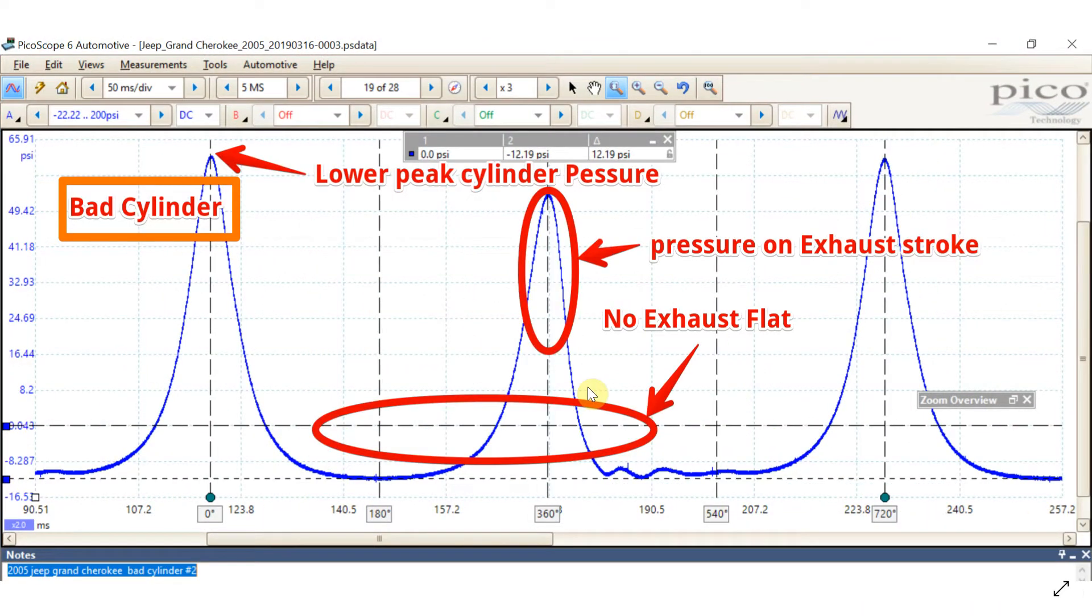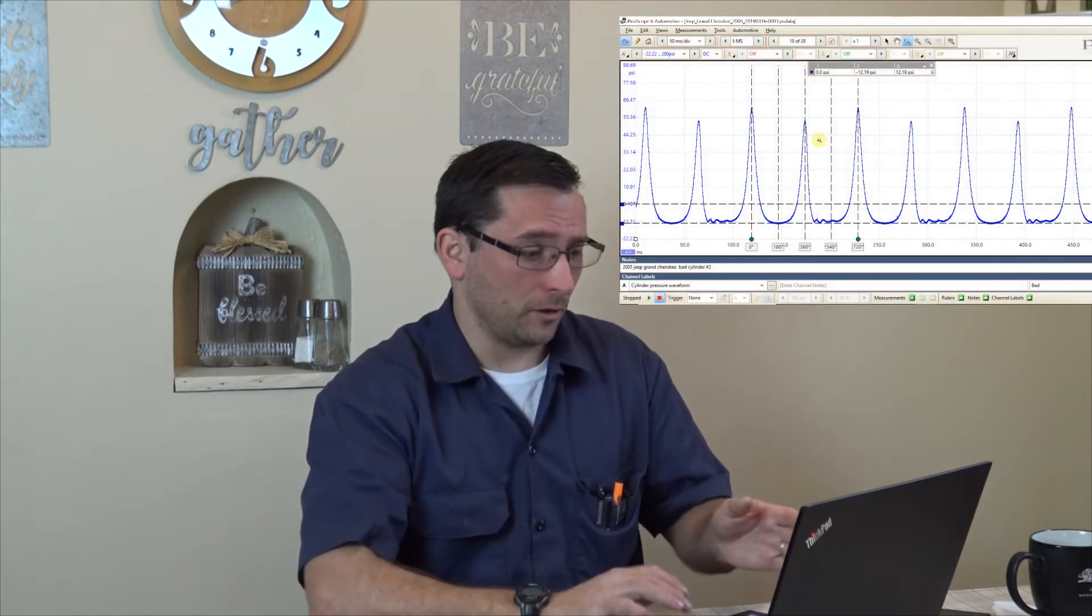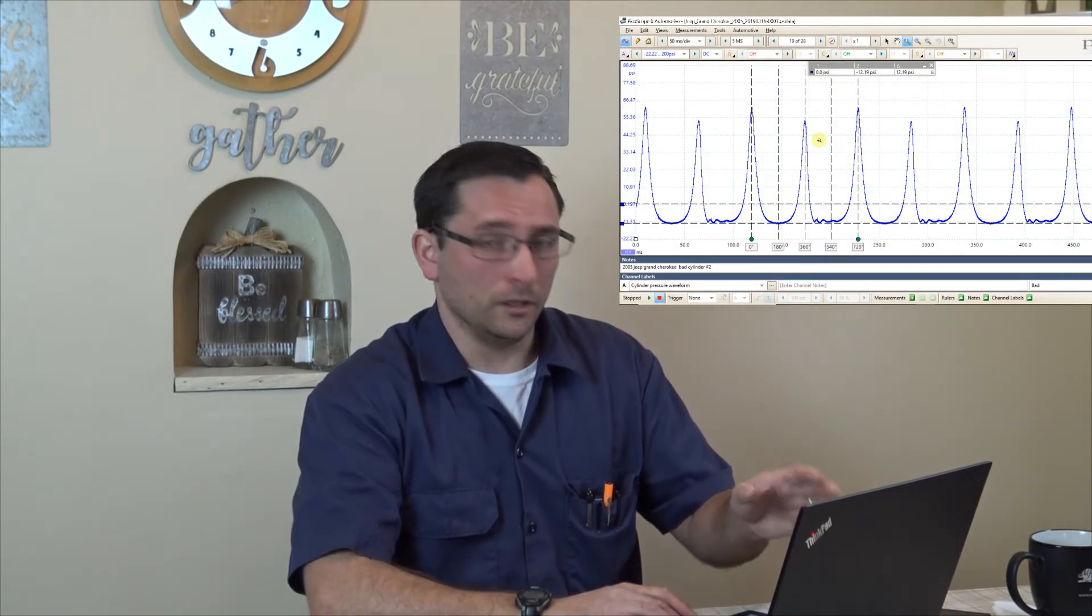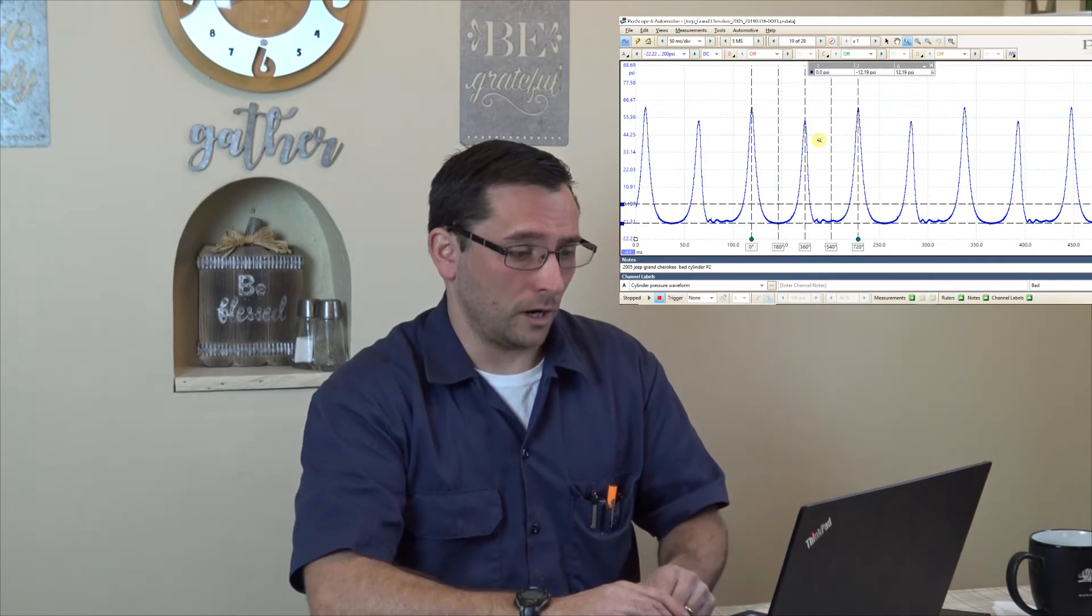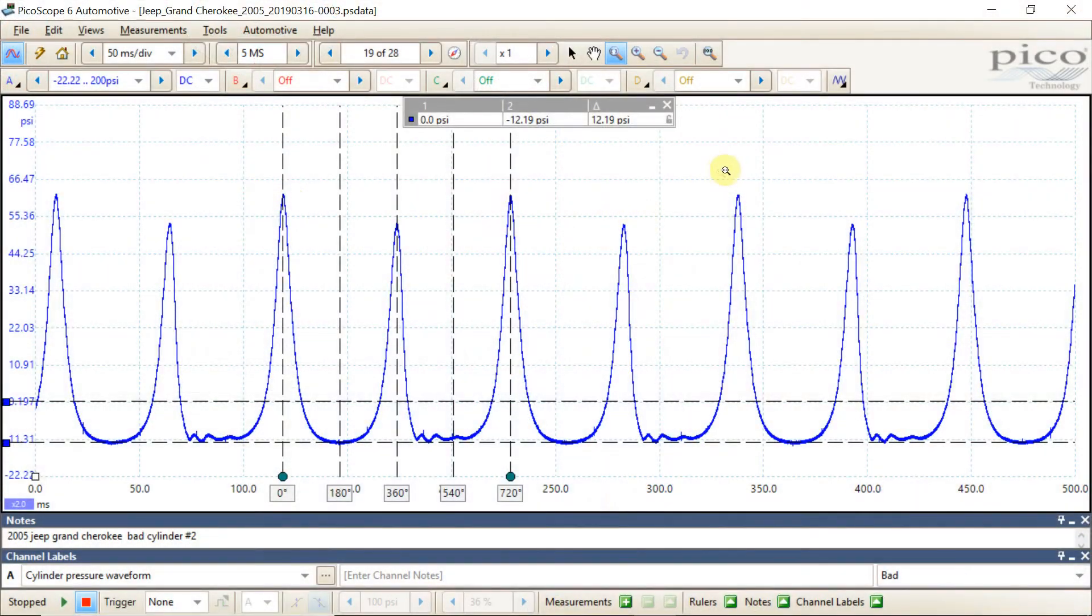Taking a look at the bad cylinder. At first when I saw this pattern, I kind of thought, why am I having every other compression stroke high, low, high, low, high, low going on? But then I quickly realized, wait a minute, the exhaust valve is not opening here.